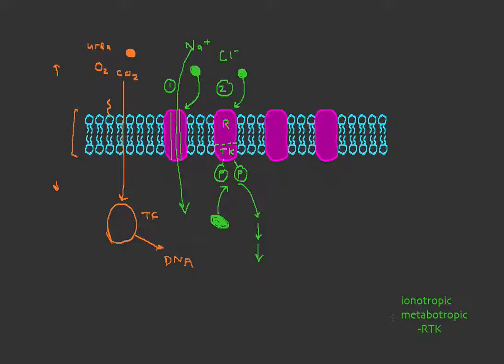And this is how metabotropic receptors work. They receive a signal, and then they initiate a biochemical cascade within the cell.